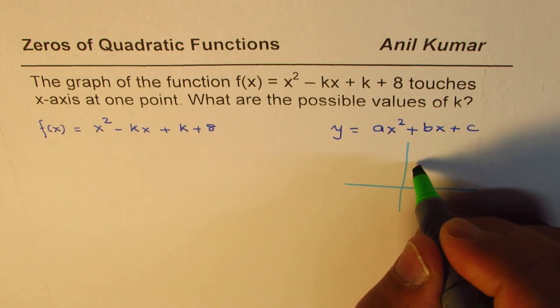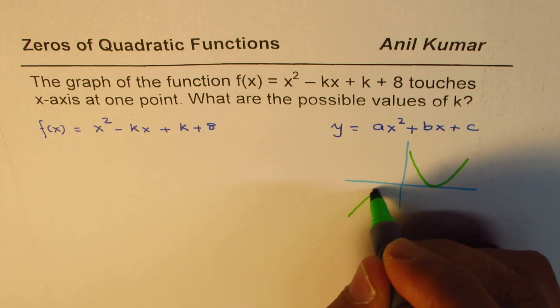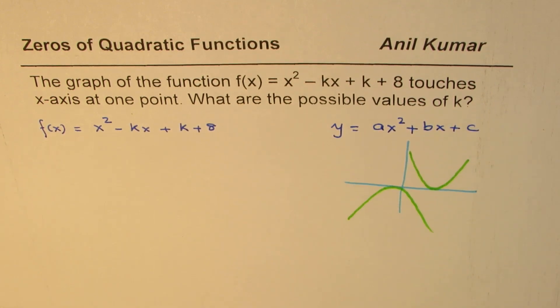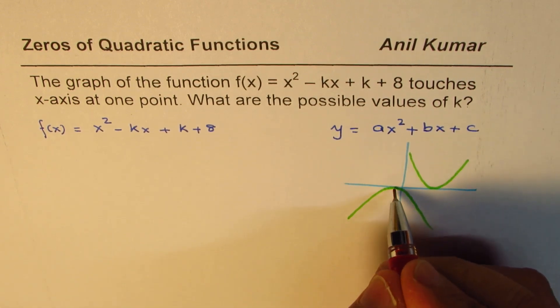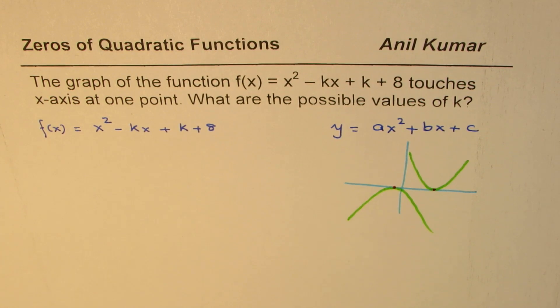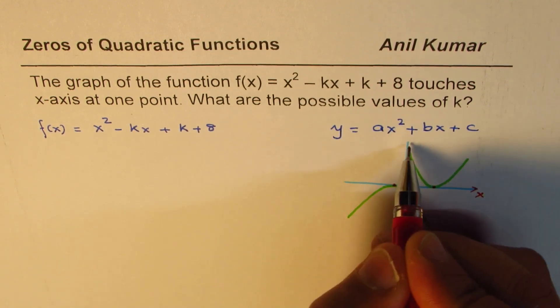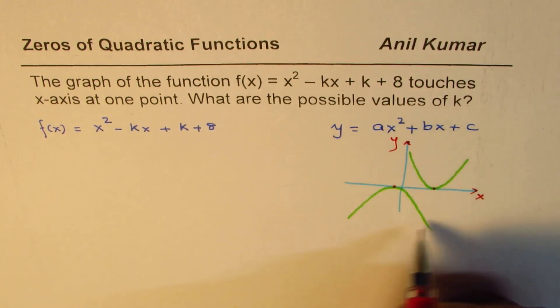It means the graph could be something like this, or it could be something like this. Now you can see that these graphs of parabola, which is parabola is a shape which you get when you graph a quadratic equation. They touch x-axis at a point. That means the vertex is on the x-axis.